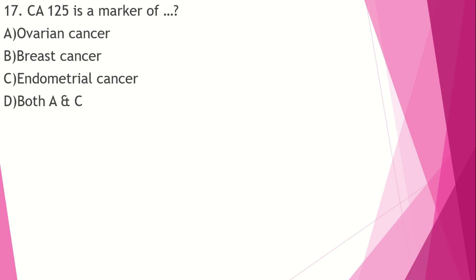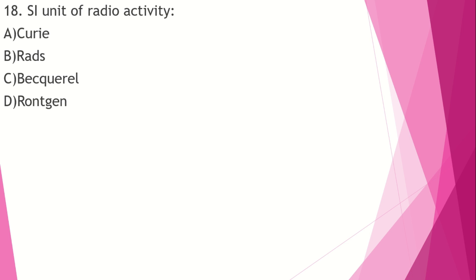CA-125 is a marker of ovarian cancer and endometrial cancer. Breast cancer marker is ER/PR. CA 19.9 is a marker for pancreatic cancer. Bence Jones protein is used as a marker in multiple myeloma.